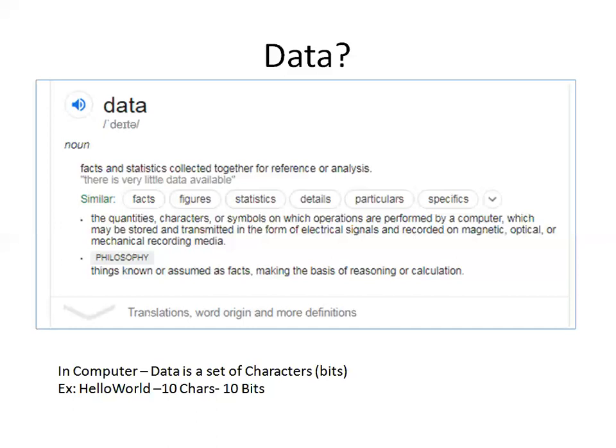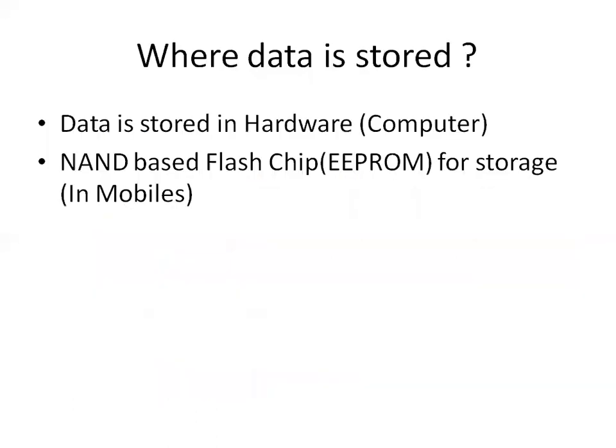We know that a computer stores information in bits format. Now, a database is all about storage of data. But it's not only just storage of data — it also deals about efficient retrieval of data. Let's understand how exactly data gets stored in the database and what are the various aspects of database.